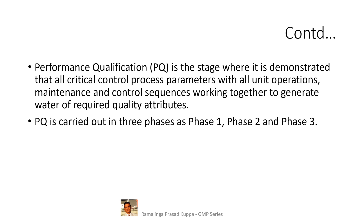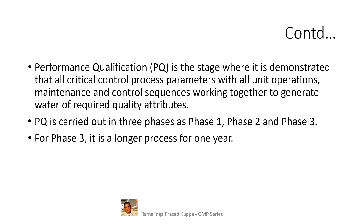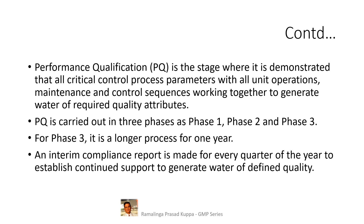Phase 3 is carried out after successful completion of phase 1 and phase 2. It is a longer process of 1 year, carried out to cover data from all seasons of the year — a 12-month period. Reduced sampling and testing, as in phase 2, may be designed for both chemical and microbial attributes. An interim compliance report is made for every quarter of the year to establish continued support in generating water of defined quality. This is important as it captures how quality attributes vary seasonally.